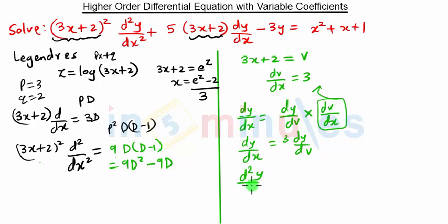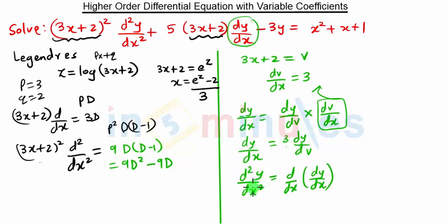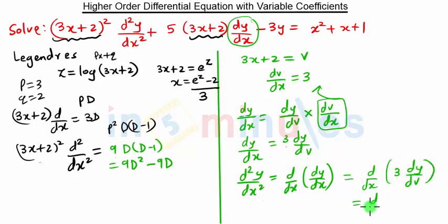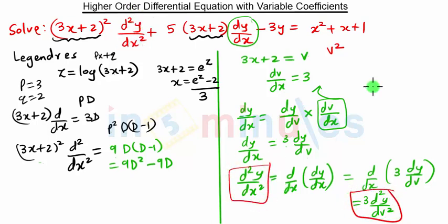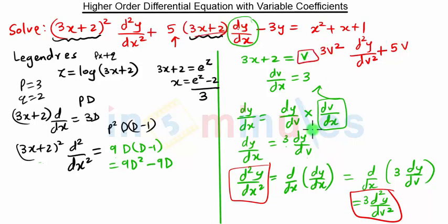Then d squared y by dx squared will be d by dx of dy by dx. Substituting dy by dx as 3 dy by dv, d squared y by dx squared becomes the derivative of 3 dy by dv with respect to x, which is 9 d squared y by dv squared. So the new term becomes v squared times d squared y by dx squared, where d squared y by dx squared is 9 d squared y by dv squared. This 3x plus 2 is nothing but v.